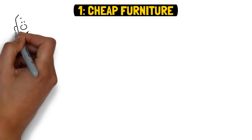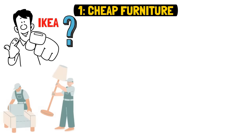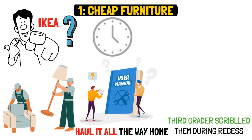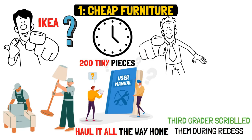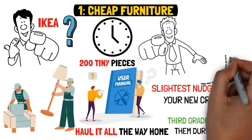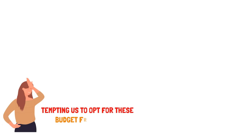One, cheap furniture. We've all experienced that infamous IKEA moment, haven't we? You dedicate hours to selecting the ideal piece, haul it all the way home, and then find yourself grappling with instructions that seem to defy logic, as if a third grader scribbled them during recess. After four painstaking hours spent navigating through the 200 tiny pieces of hardware included, you've reached the moment of truth. It stands. Yet, alas, even the slightest nudge causes your new creation to shudder and quiver like a bowl of jello. This experience is almost a rite of passage, tempting us to opt for these budget-friendly yet frustrating options, especially when furnishing our first place.